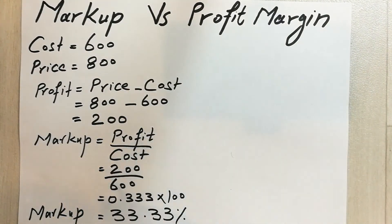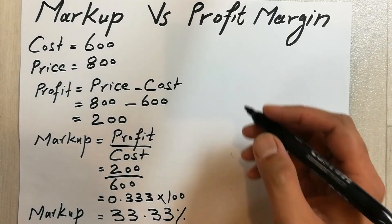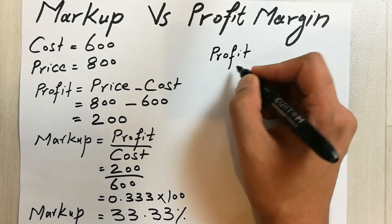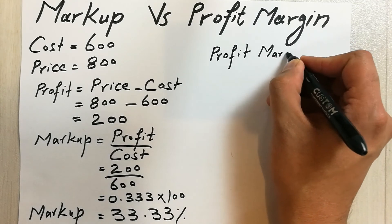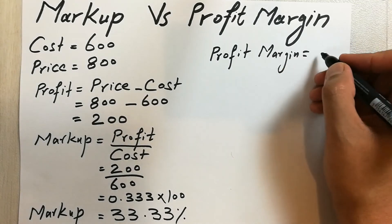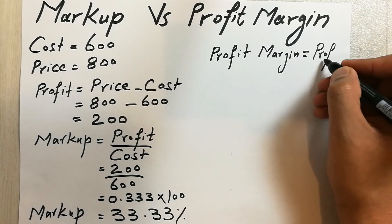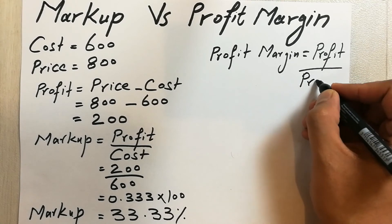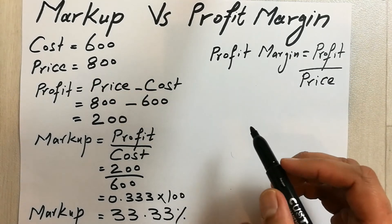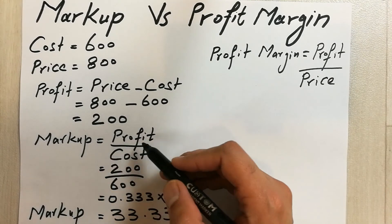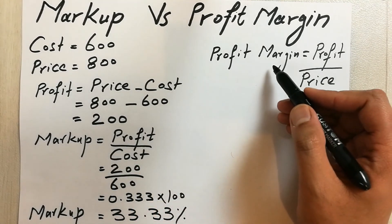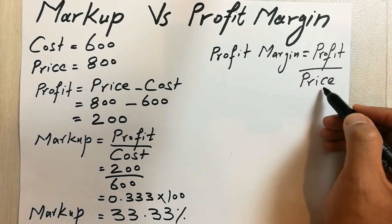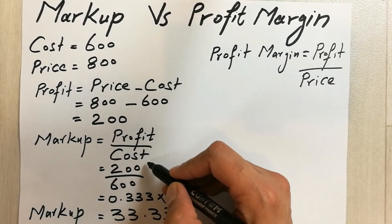In the next step we will find out the profit margin. The formula for profit margin is profit divided by price. You can see the key difference here: for markup it's profit divided by cost, but for profit margin it's profit divided by price — the denominator is different.